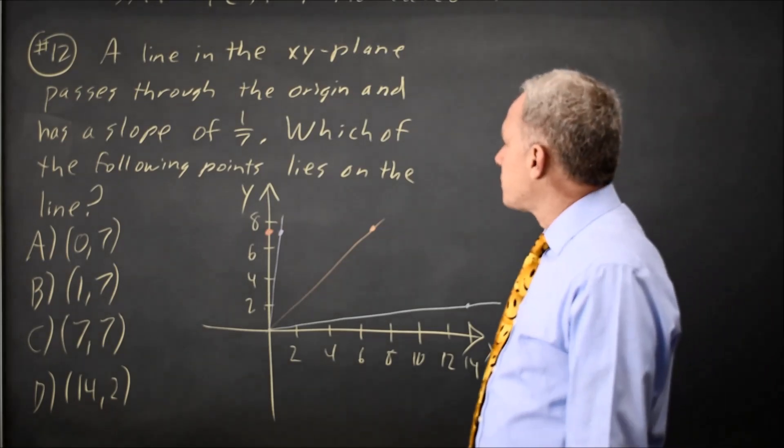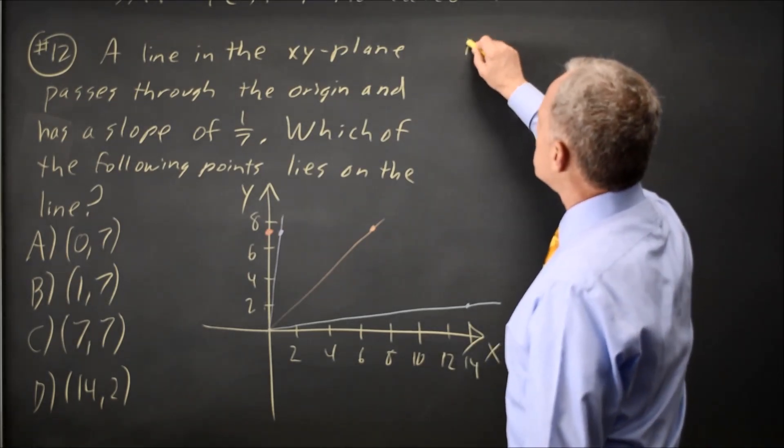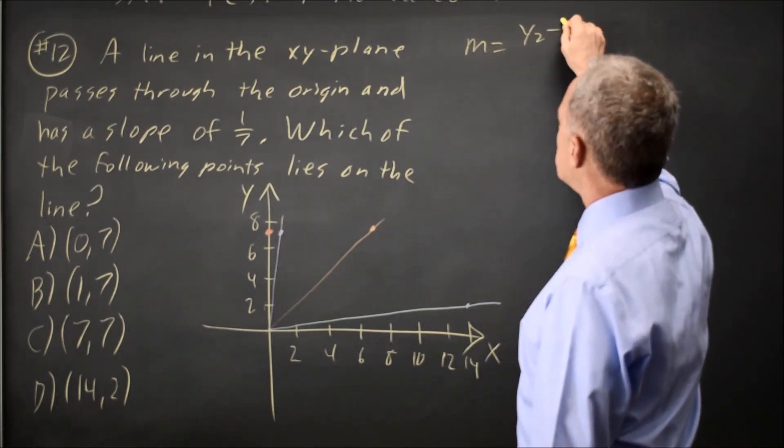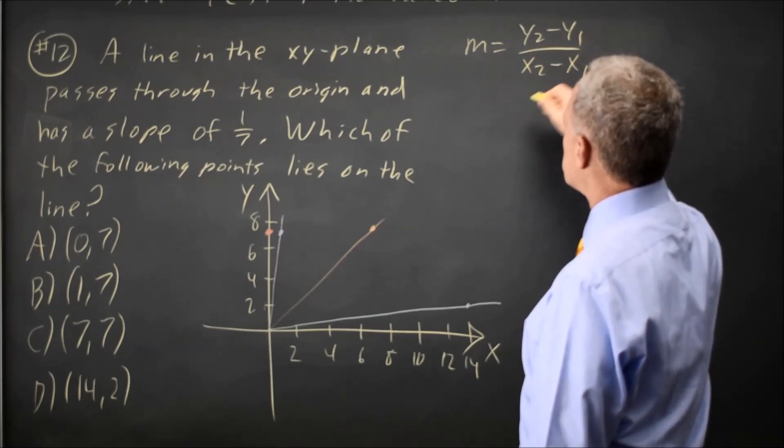If we wish, we can also calculate the slope. Your slope is y2 minus y1 over x2 minus x1.